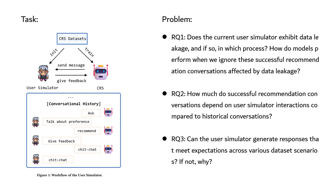Firstly, does the current user simulator exhibit data leakage, and if so, in which process? How do models perform when we ignore the successful recommendation conversations affected by data leakage?